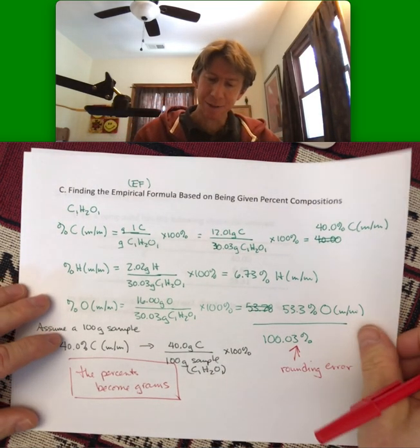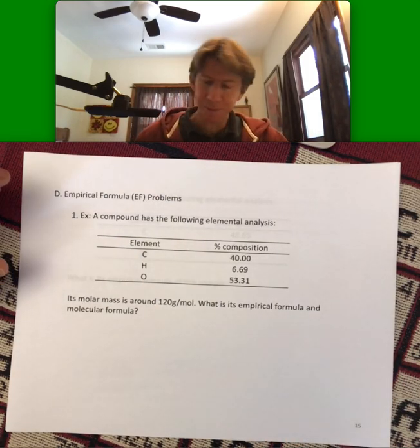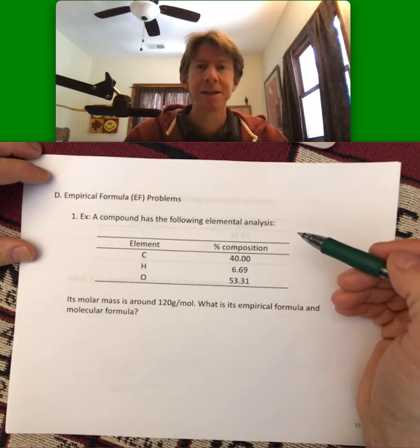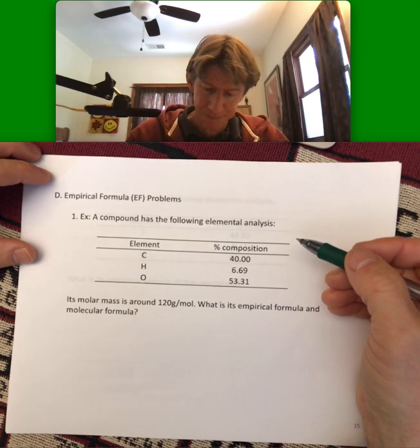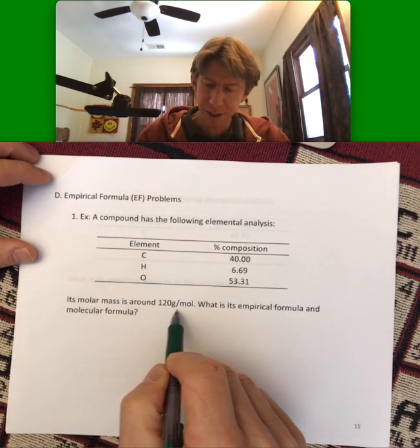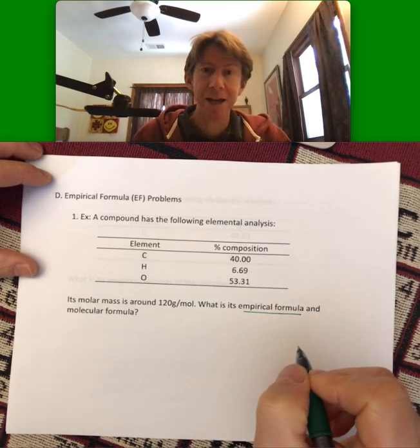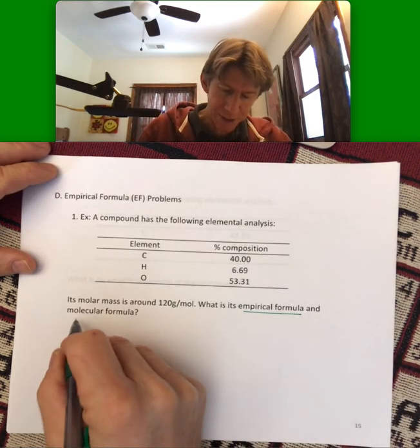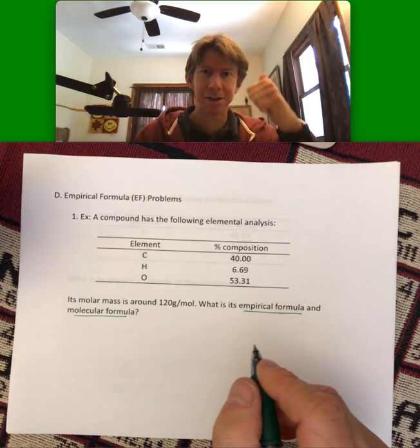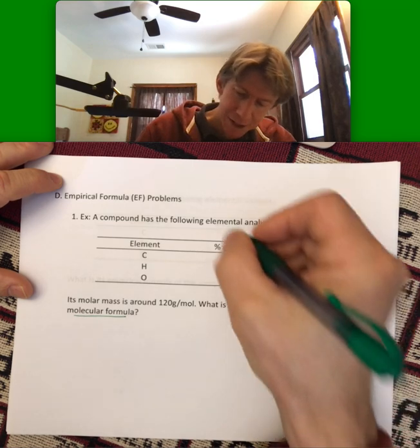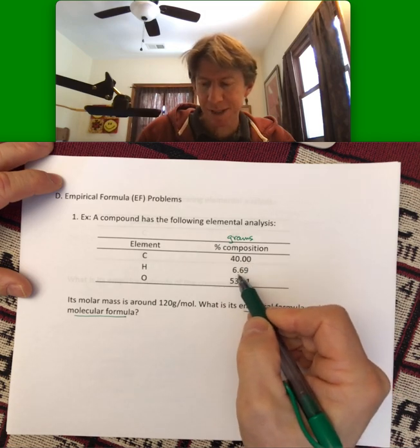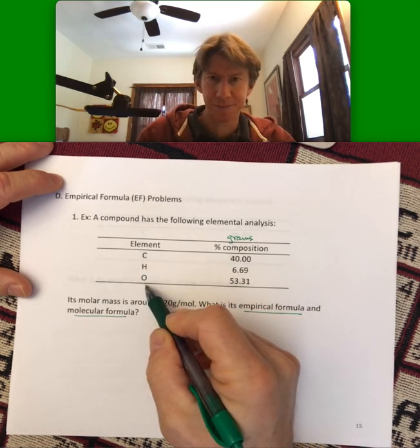The percents become grams, and that is something that will be helpful to remember as you work over the next several pages. Let's jump to the next page now, and this is a typical empirical formula problem. A compound has the following elemental analysis. There are machines, chemistry machines, that give you elemental analysis answers like this. It says carbon 40.00%, hydrogen 6.69%, oxygen 53.31%. Its molar mass is around 120 grams per mole. What is its empirical formula? And I'll also talk about how to find the molecular formula. Now, and what I just said earlier in this video, is that whatever the percent composition is, those are going to be grams. So, now we know we have 40.00 grams of carbon, 6.69 grams of hydrogen, and 53.31 grams of oxygen.